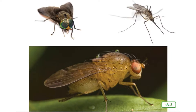I am a housefly, the most common type, but there are many other fly species on Earth. A species is a group of plants or animals that are alike in important ways. Horseflies, robberflies, fruitflies, gnats, and mosquitoes have many different species that all belong to the same group.